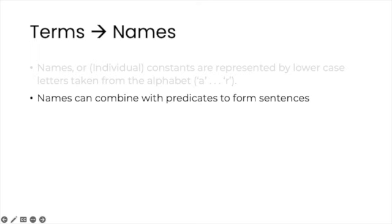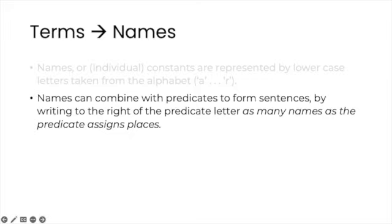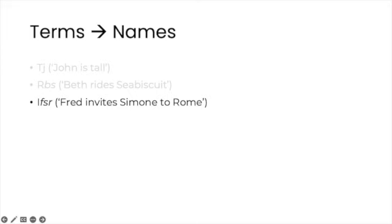Names can combine with predicates to form sentences. You do this by writing to the right of the predicate letter as many names as the predicate assigns places. For instance, our predicate T, for tall, assigns only one place. So to form a sentence we add one name. Suppose that J is John, then TJ would be the symbolization of the English sentence John is tall. R, which we are using to stand for rides, assigns two places. So to form a sentence we write two names, one for the rider and the other one for what the rider rides. Then RBS could symbolize Beth rides Seabiscuit. I assigns three places, one for each of the participants in the event of inviting someone to something. So we add three names, and then we could represent Fred invites Simone to Rome.